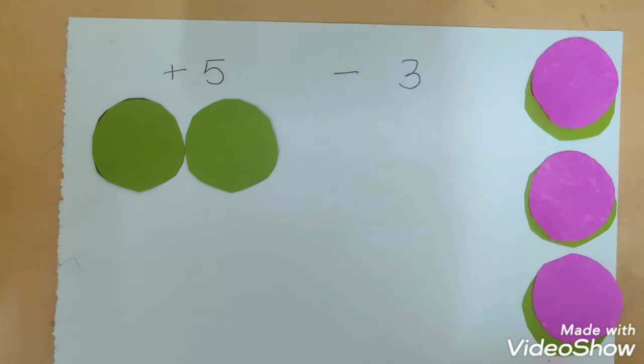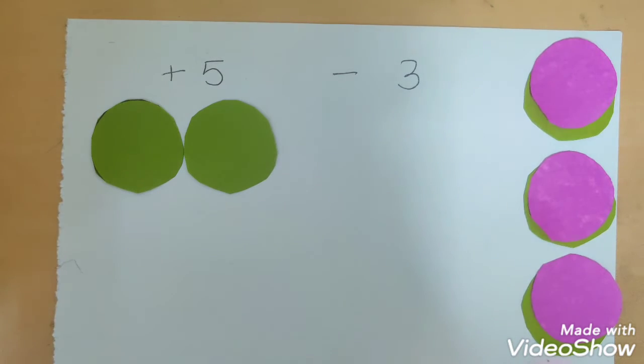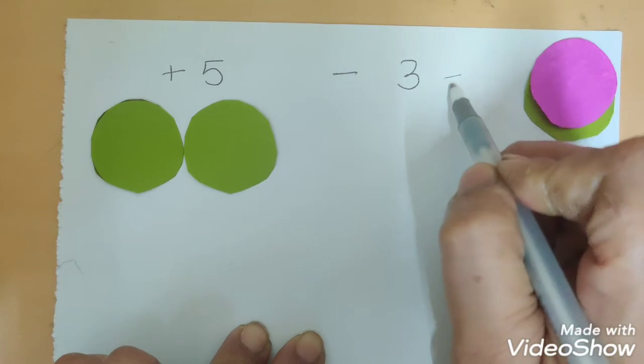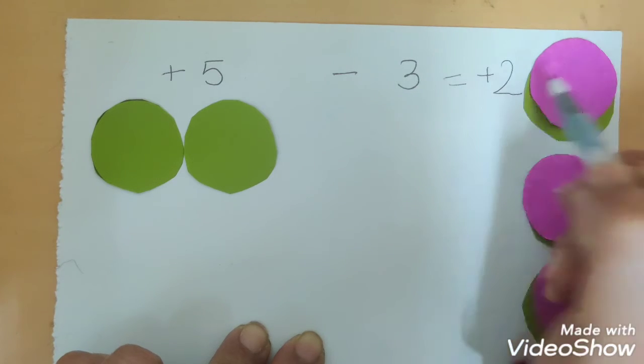Nullify means it becomes equal to 0. And what I am left with is just 2 of the green. So, that is nothing but equal to plus 2 because we associate green color to the plus symbol.